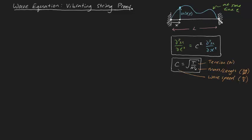Let's say we have a string which is taut and pinned at both ends. We describe the vertical displacement of this string as u, and in general it's a function of two variables x and t, where x is length and t is time. If you go through the maths and make some simplifications, you can show that the double partial derivative of u with respect to time equals c squared times the double partial derivative of u with respect to x, where c is given by the square root of tension T divided by mass per unit length ml.